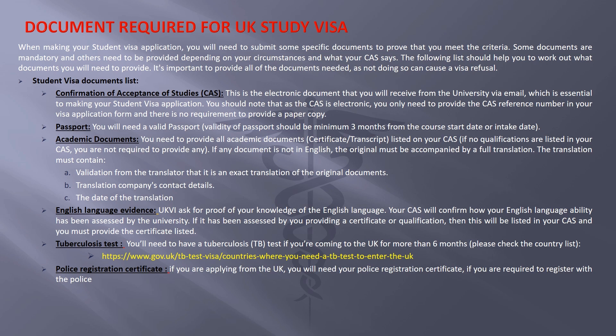Student visa documents list. Confirmation of Acceptance for Studies (CAS) — this is the electronic document that you will receive from the university via email, which is essential to making your student visa application.